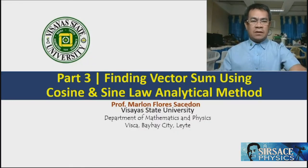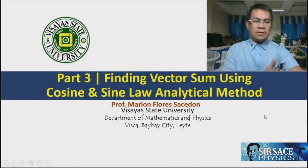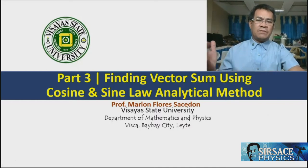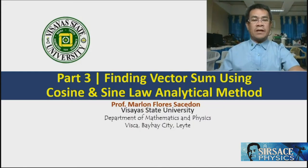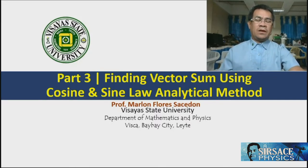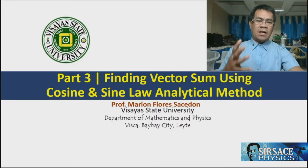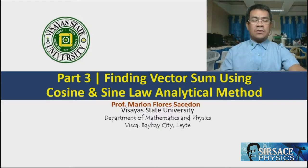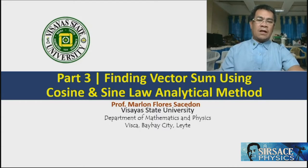Our topic for today is the vector sum, calculated using the cosine and sine law analytical method. Note that this is analytical. In our previous video, Part 2, we calculated the vector sum using the polygon graphical method using a protractor and ruler. Today, using the analytical method, the drawing is not drawn to scale, so we don't need a protractor or ruler—only a calculator and paper.